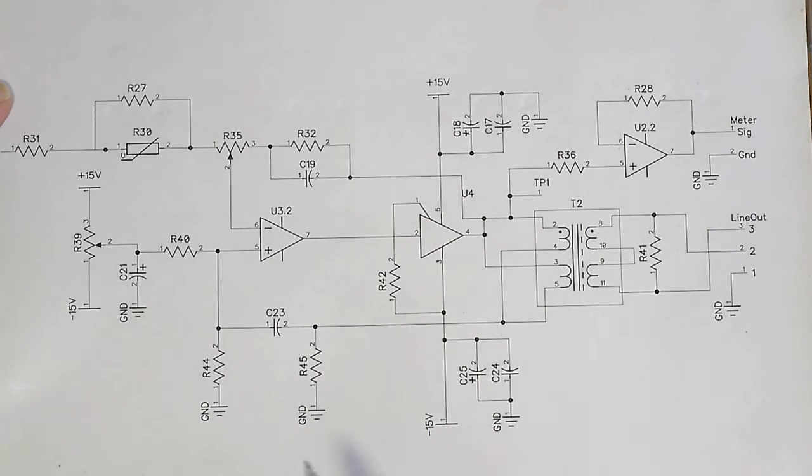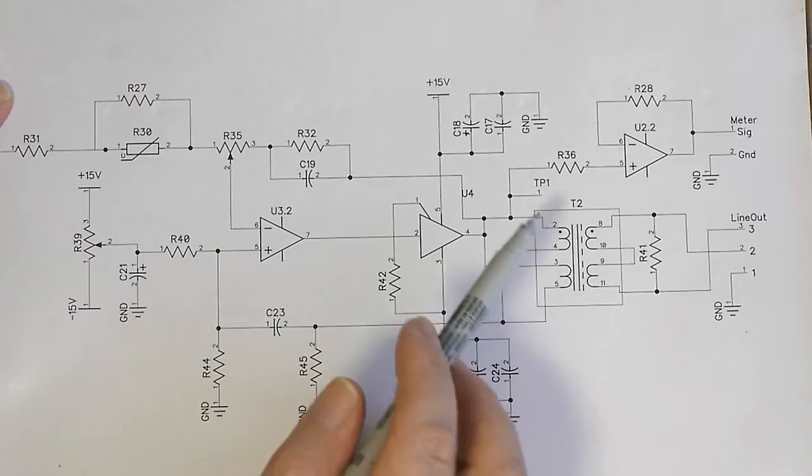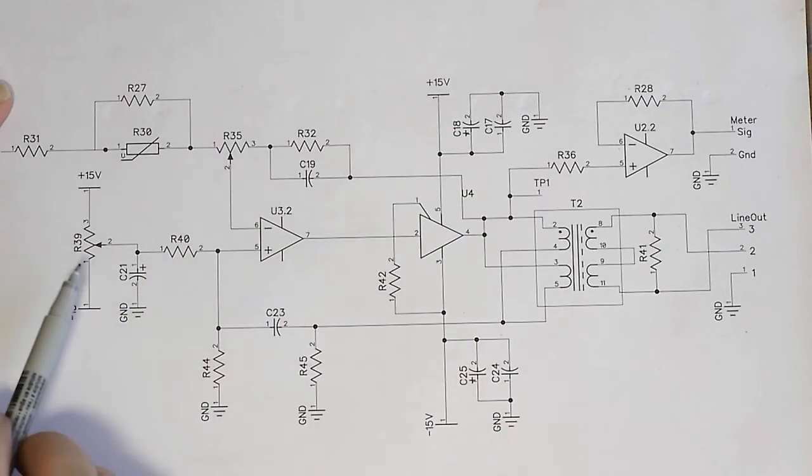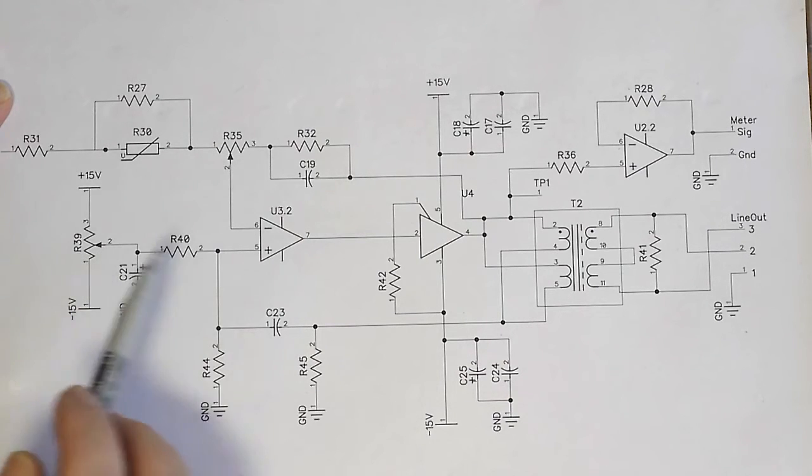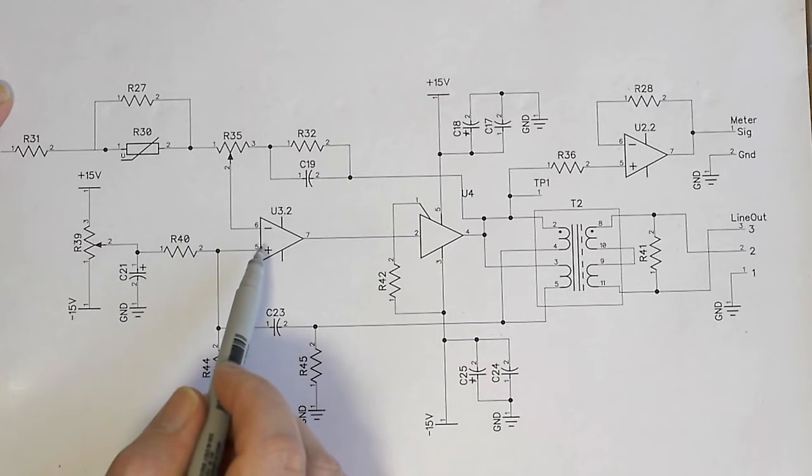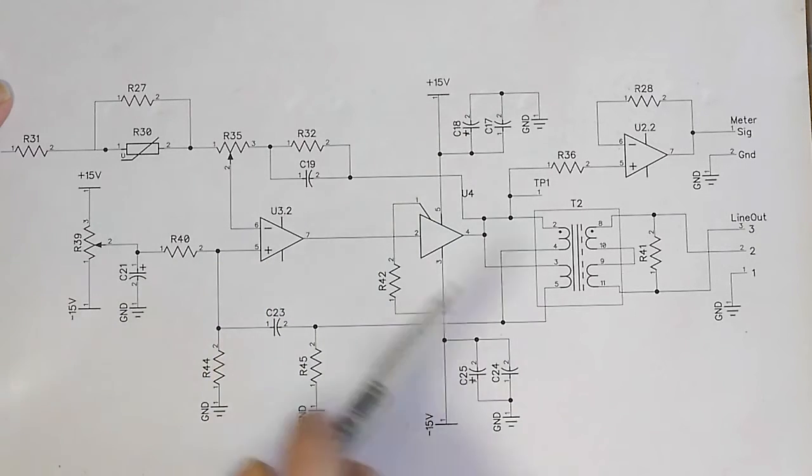Now, if you recall from the previous video, we did make one adjustment to this stage, which was to eliminate the DC offset at test point one. And that was by adjusting resistor R39 here, which as you can see, voltage divider there. Nice and clean. So that sets a DC offset here.